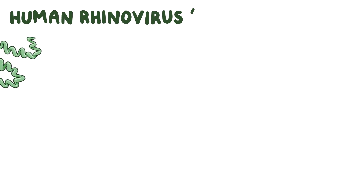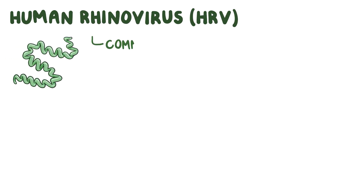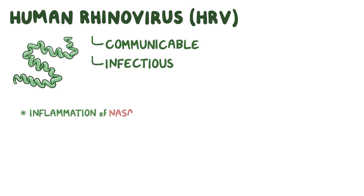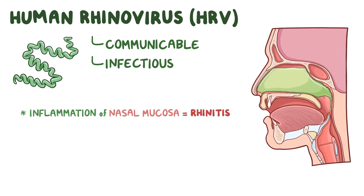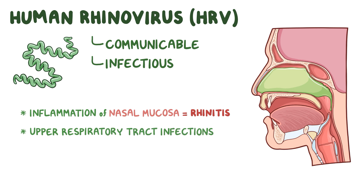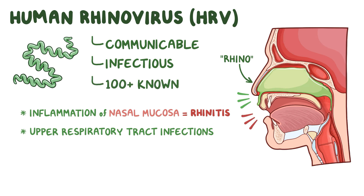Human rhinovirus, or HRV, is a communicable infectious virus that causes inflammation of the nasal mucosa, or rhinitis. It mainly causes upper respiratory tract infections, and it gets its 'rhino' name — meaning nose — because it commonly causes a runny nose, nasal congestion, and sneezing, as well as a sore throat and cough. There are over 100 serologic known types, and all of them can cause a common cold in humans.